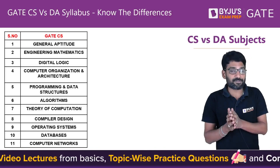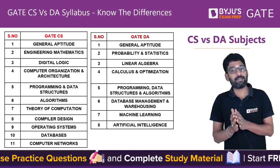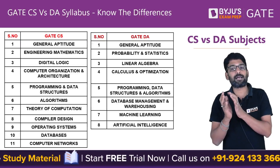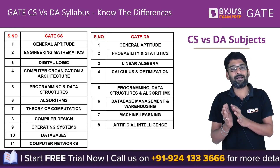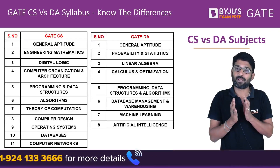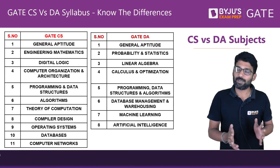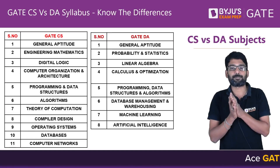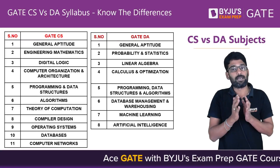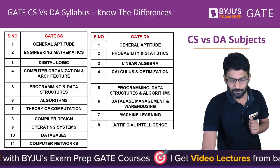Now if you look at the number of subjects in Data Science and Artificial Intelligence, we have: Aptitude as common, Probability and Statistics as a separate subject, Linear Algebra as a separate subject, Calculus and Optimization as a separate subject, Programming, Data Structures and Algorithms together as a single subject, Database Management and Warehousing as a single subject, and Machine Learning and Artificial Intelligence. So in CS it's 11 subjects including Aptitude, and in DA it's 8 subjects including Aptitude.